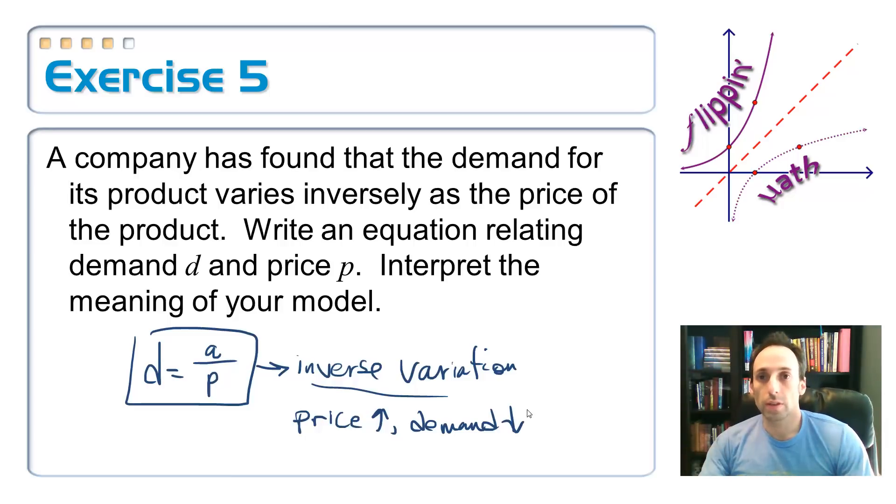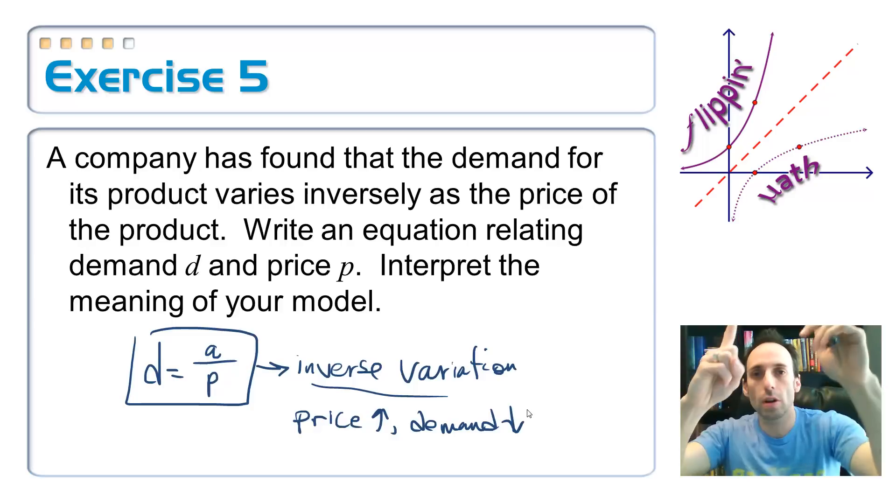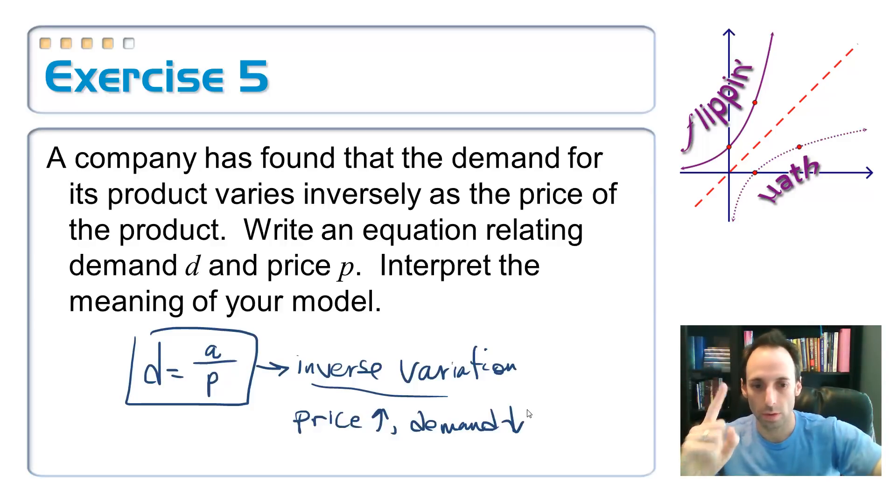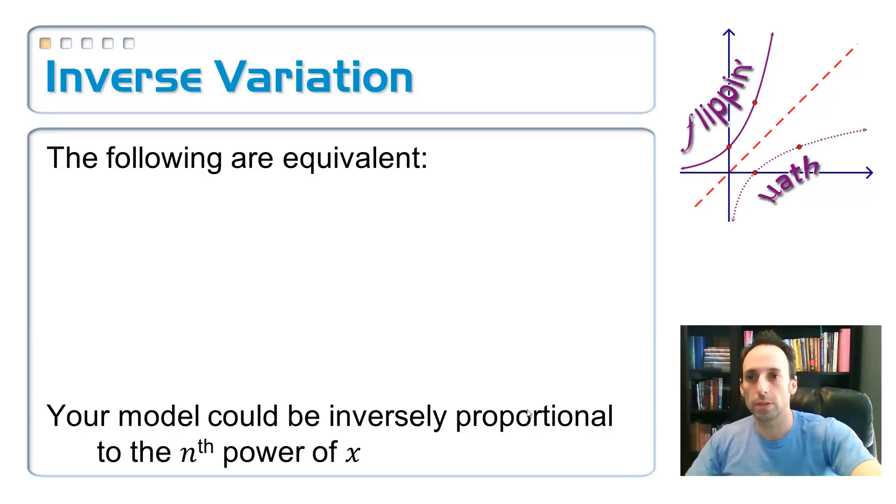This is the exact opposite of direct. In direct variation, if one of the quantities goes up, the other one also goes up. This one's the opposite. One goes up, the other one goes down. That's what inverse variation means.